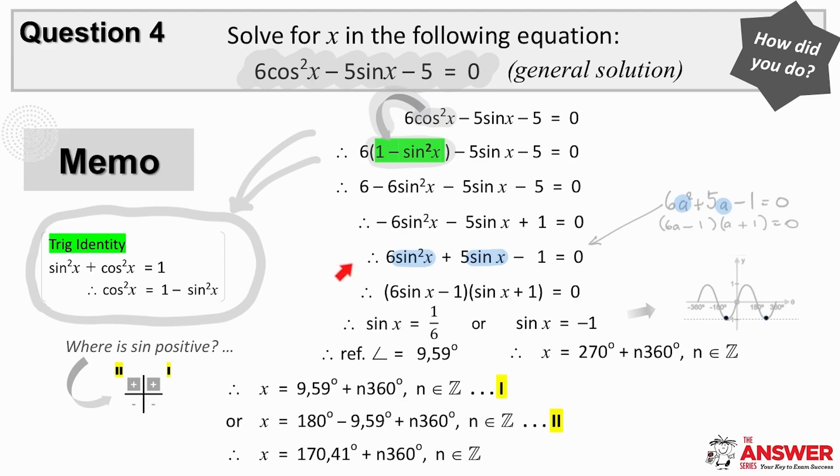This then factorizes to 6 sine x minus 1, sine x plus 1. Our new equations come from knowing that either one or the other of these brackets must be zero for the product to be zero.